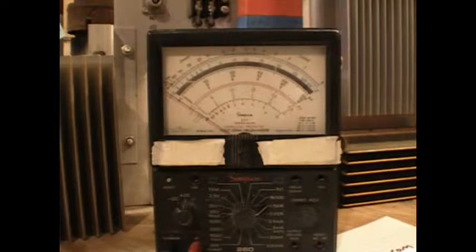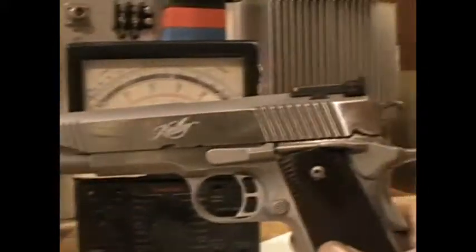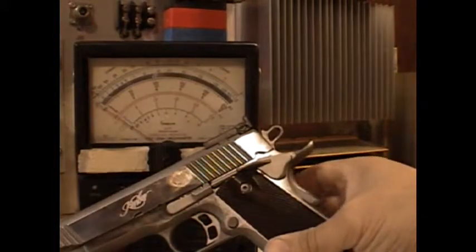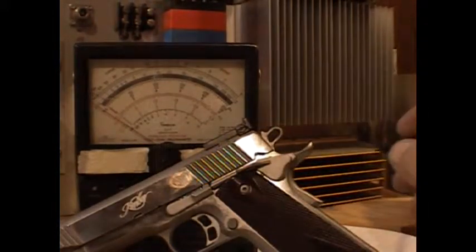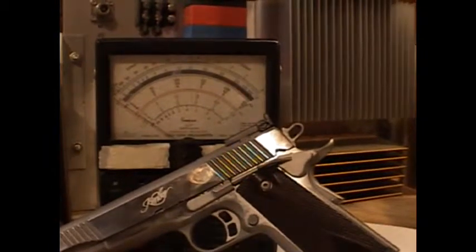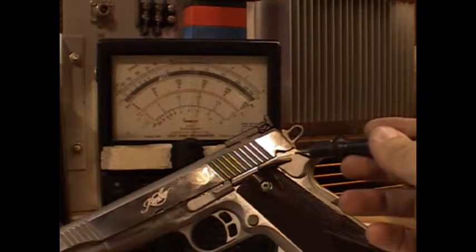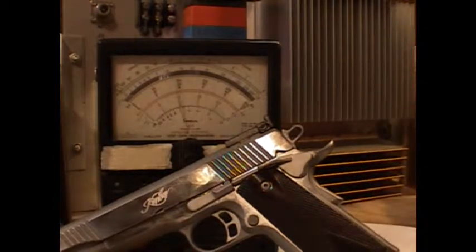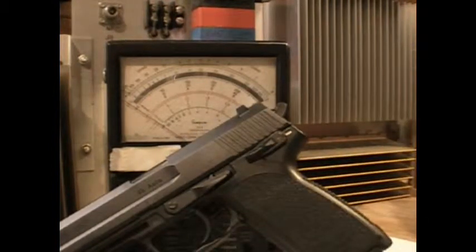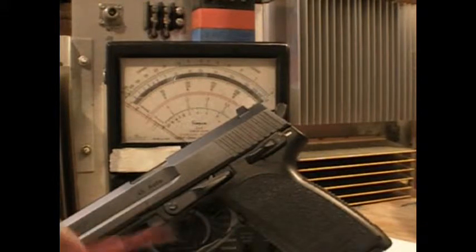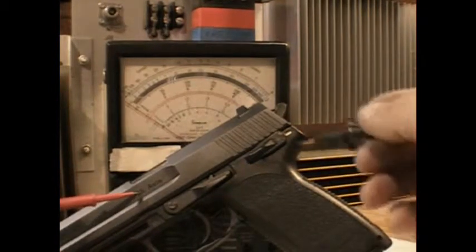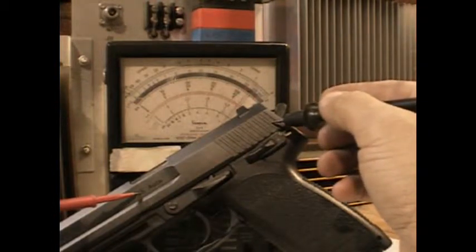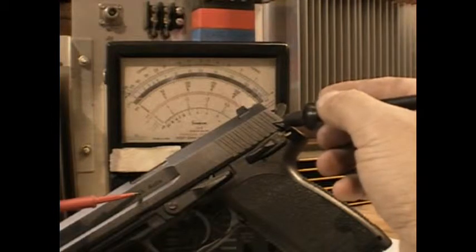First we'll start off with Kimber 1911 45, stainless steel. How much resistance can you have with stainless steel? One end here, the other end around here. You're not going to encounter any resistance with the 45. Let's test the USP HK 45, blued polymer handle there. So let's just pick a point anywhere here and on the slide, pick another point. No resistance when it comes to the USP 45 HK. And it shouldn't be.